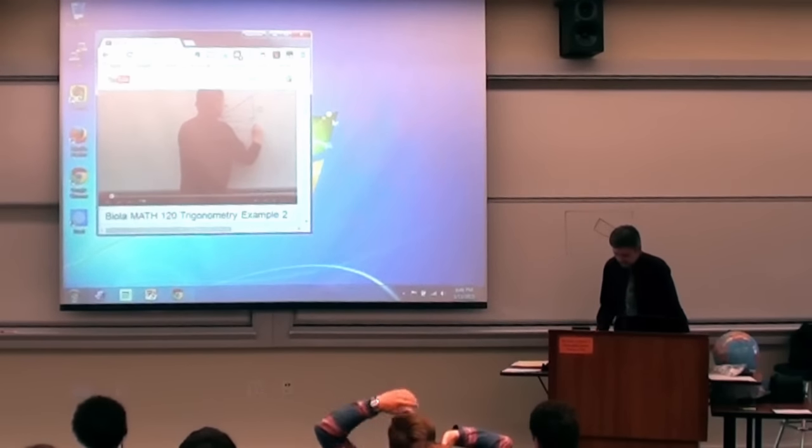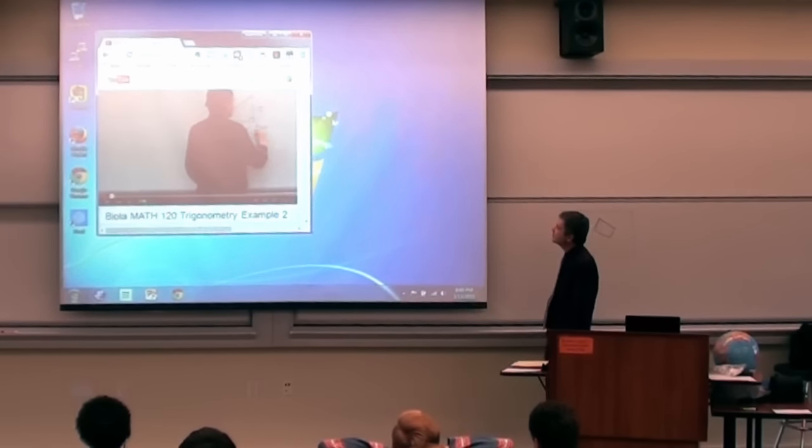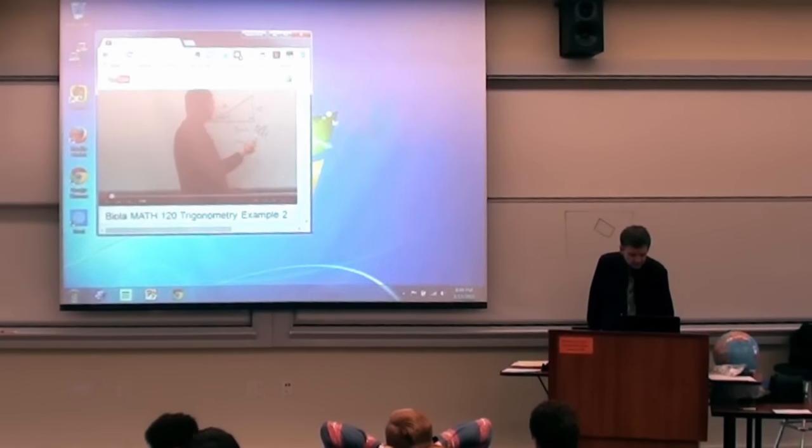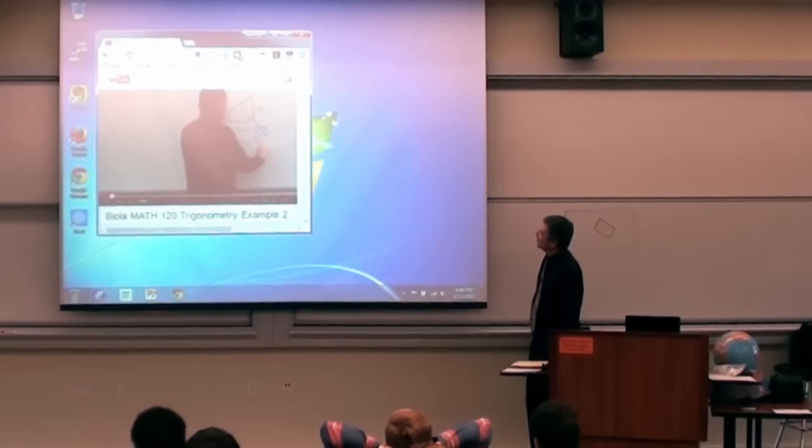Because the sine is hypotenuse over the opposite. Oh, wait. And so we've got sine is equal to, and our hypotenuse here is x. That's totally backwards, isn't it? How embarrassing. That's really embarrassing.